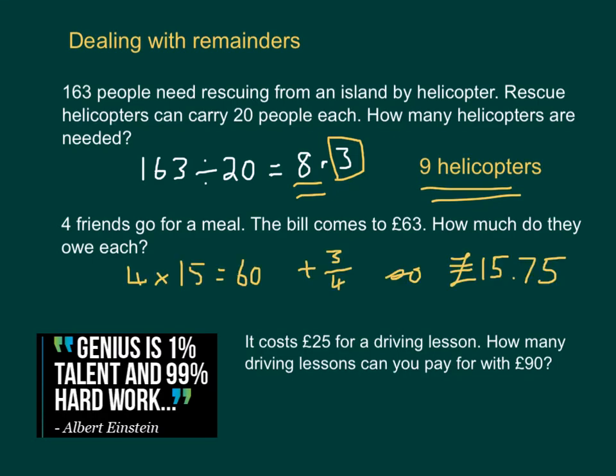For the second question, if the friends each paid £15, of course, that would only make £60. So, there'll be another £3 that they'll need to come up with, and that's between the four of them. So, actually, they'll need to pay another 3 quarters of a pound, or another 75p. So, in total, they'll pay £15.75. Now, of course, in real terms, they might feel generous and want to give a tip.